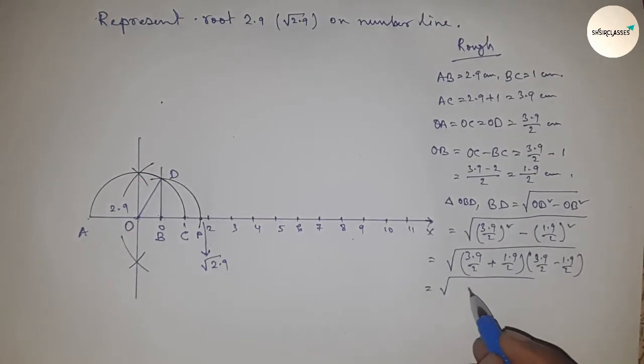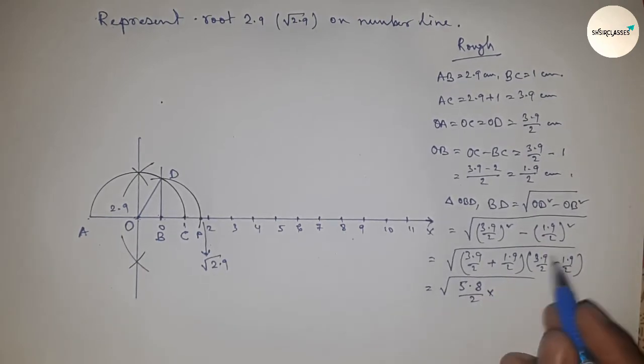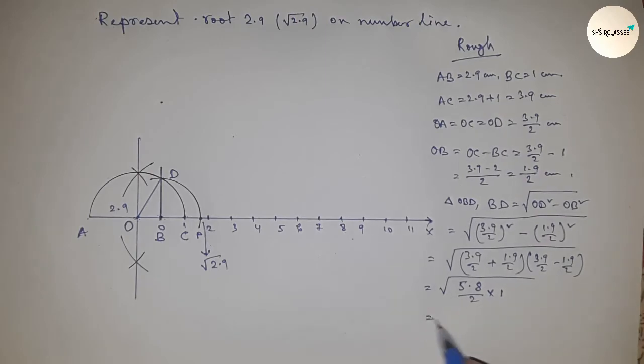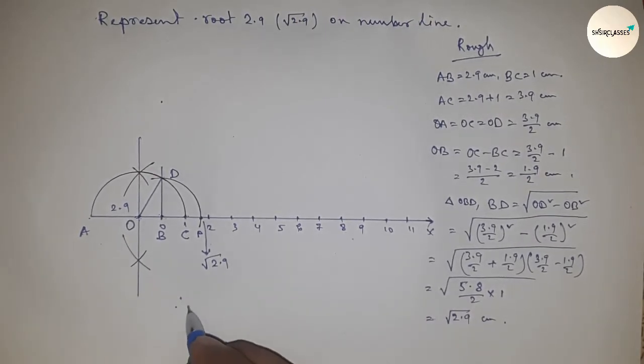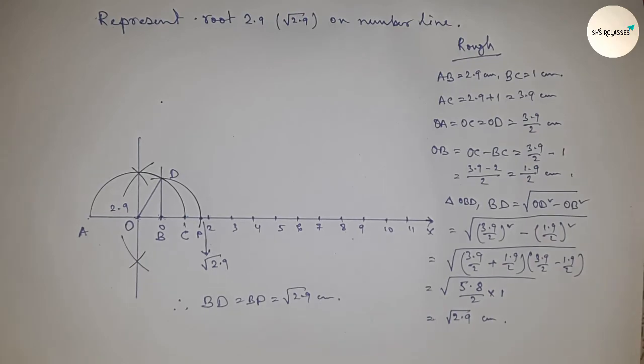From this we get 5.8 by 2 into 1, which equals root 2.9 centimeters. Therefore, distances BD and BP are equal, so this is root 2.9 centimeters. That's all, thanks for watching.